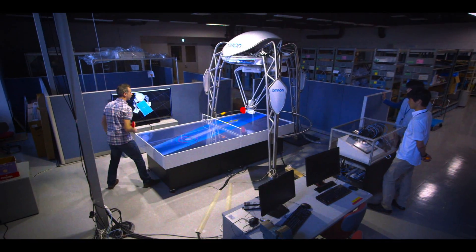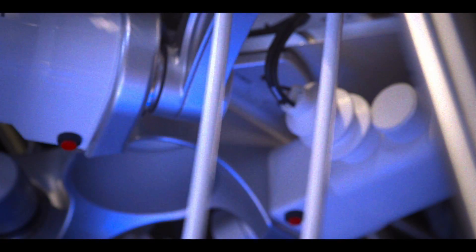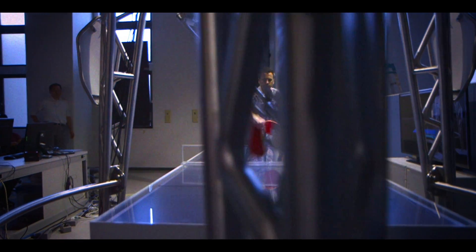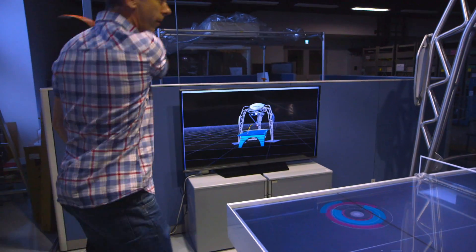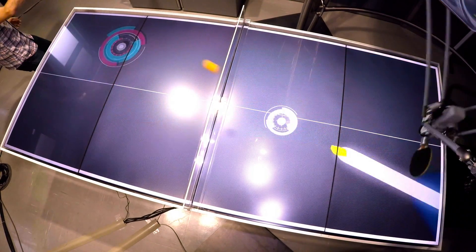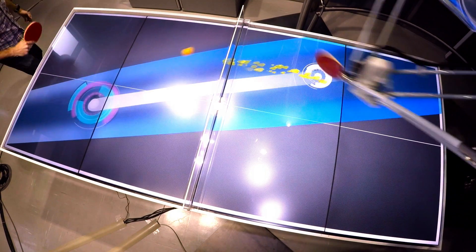This is Omron's new, improved table tennis robot. Last year, it amazed us by keeping a rally going seemingly indefinitely. This year, it's been adapted to help a human learn to play.